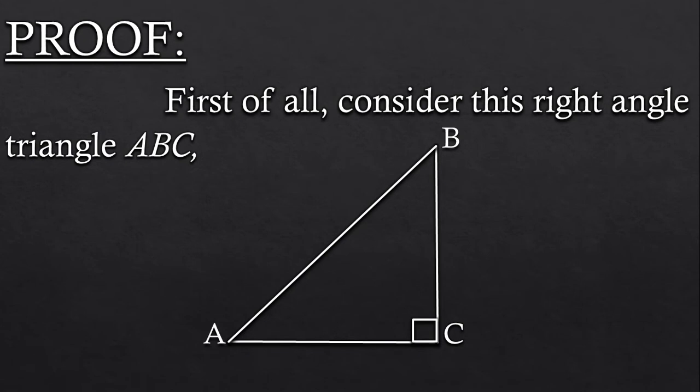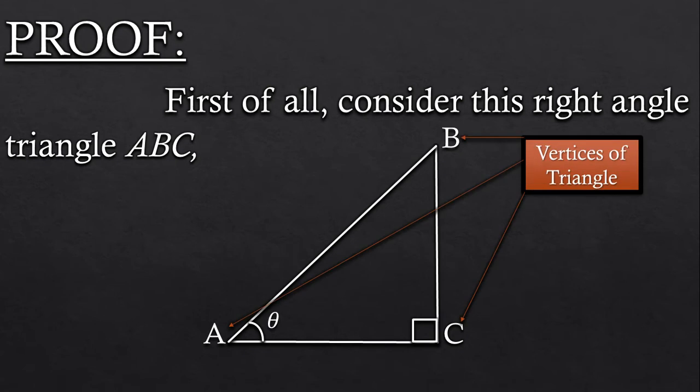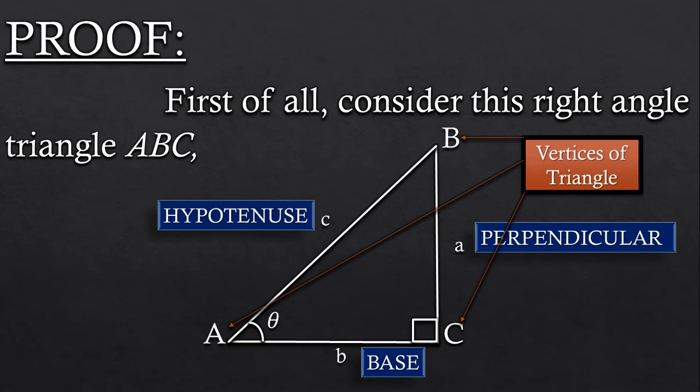Alright to start the proof, consider this right angle triangle ABC which has right angle at its C corner and angle theta at its A corner. Here ABC are called vertices of triangle and small a, b, c are the perpendicular, base and hypotenuse respectively.